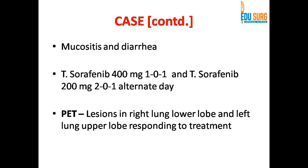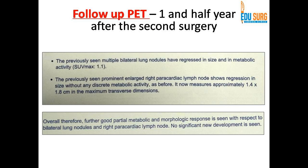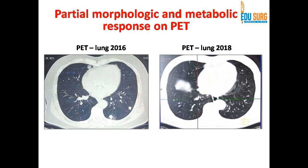He had mucositis and diarrhea on the full dose of sorafenib, so we adjusted to sorafenib 400 mg and 200 mg alternating so that side effects could be managed. A PET scan done one year later showed regression in size of the pulmonary nodules and no lesion in the abdomen. Comparing scans at the same level for pulmonary metastases, there was both morphologic and metabolic response on PET comparing 2016 and 2018.